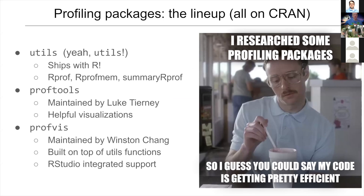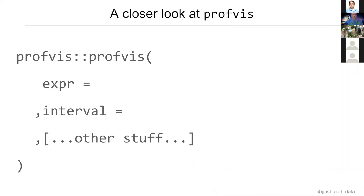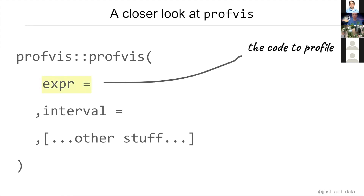Let's take a closer look at the profvis package. The main function is conveniently called profvis and it's got a bunch of arguments, but the most important one is the expression argument — the code you want to profile, usually a function you've written yourself. The other main argument is the time interval in seconds at which you want to sample the call stack, usually a pretty small number. There are other options including output options and memory management that you should explore on your own.